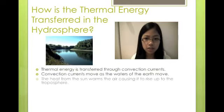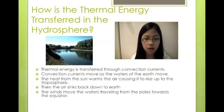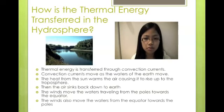The heat from the sun warms the air causing it to rise up to the troposphere. Then the air sinks back down to the Earth. The winds move the waters traveling from the poles towards the equator and from the equator towards the poles.